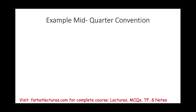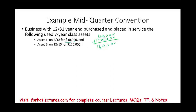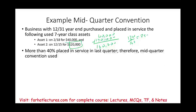Let's look at an example. A business with a December 31st year-end placed in service the following used seven-year class assets: Asset 1 on February 18th for $40,000, and Asset 2 on December 15th for $120,000. First, determine whether to use the half-year or mid-quarter convention. Total assets: $40,000 plus $120,000 equals $160,000. In the fourth quarter, $120,000 was placed — that's 75% of total assets. Since this exceeds 40%, you must use the mid-quarter convention.